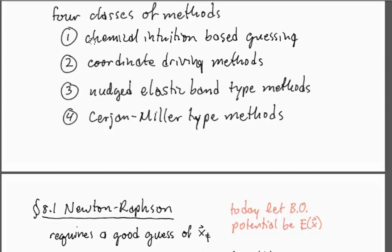There are four classes of methods for finding saddle points. One of them that I think is somewhat underrated is chemical intuition. If you have chemical intuition and you know what kind of transition state you're looking for, this is a great way to prepare an initial guess. The other three methods on this list are ways of improving that initial guess.